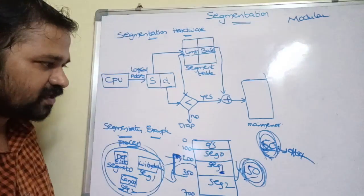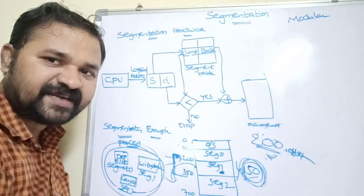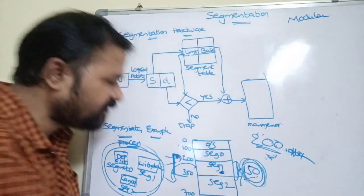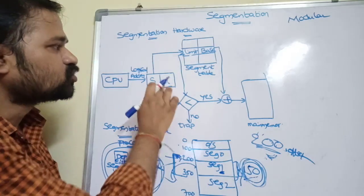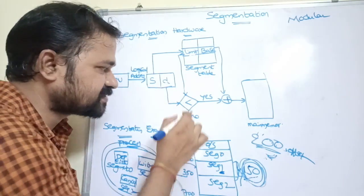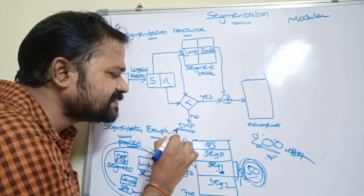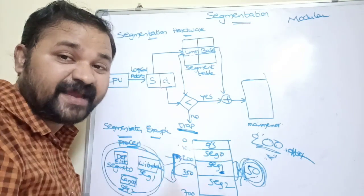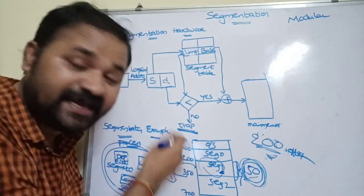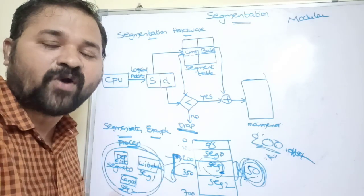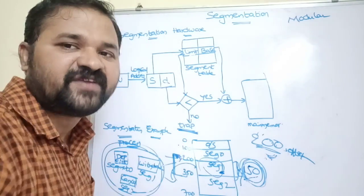Now suppose the offset is 200, while the length of the segment is 150. Comparing these: 200 is not less than 150, so the condition is false. When the condition is false, the operating system generates a trap — that is, an interrupt — and that segment's execution is terminated. This means segment one is trying to access other segments' space, so the operating system generates a trap and terminates that process.